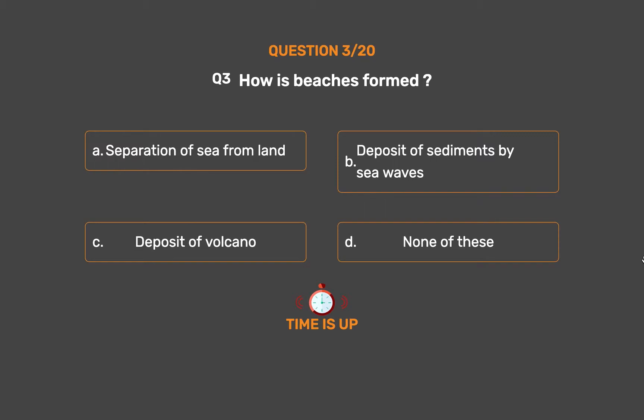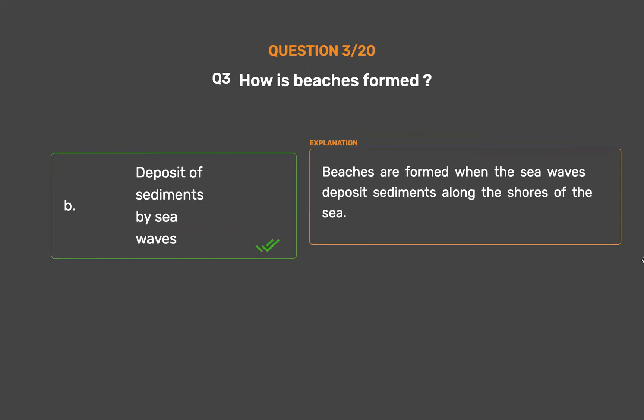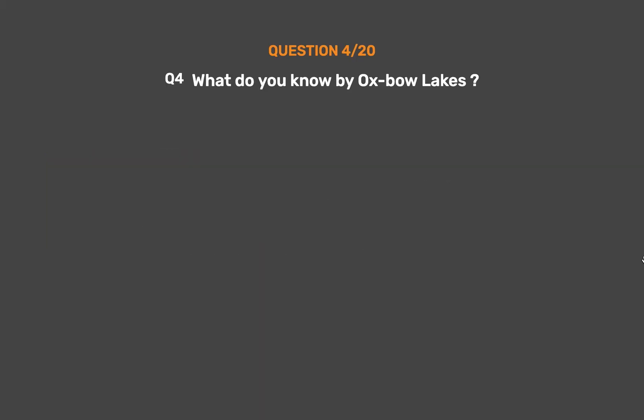The correct answer is Option B: Deposit of sediments by sea waves. Beaches are formed when the sea waves deposit sediments along the shores of the sea.